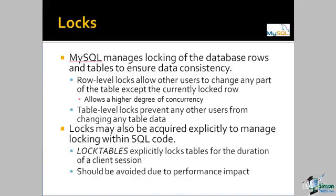A database is made up of tables; the tables are made up of rows; the rows are made up of columns; and the columns contain the data. When we talk about row-level versus table-level locks, we can support a higher level of concurrency — that is, multiple transactions accessing the same table at the same time — when we use row-level locks rather than table-level locks. So row-level locks are significantly more efficient and provide a higher level of concurrency in the database.